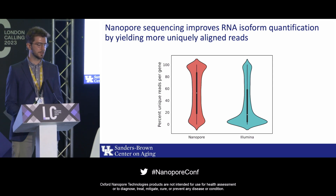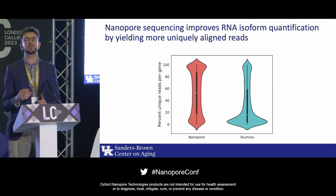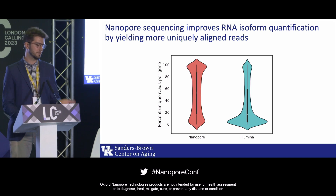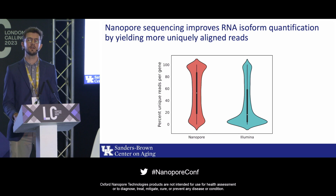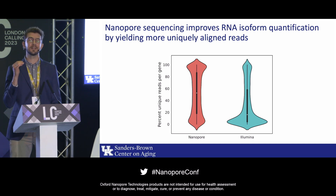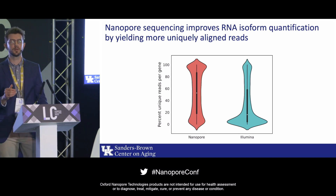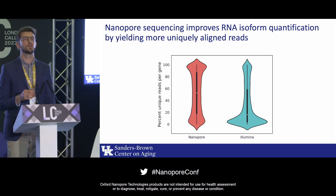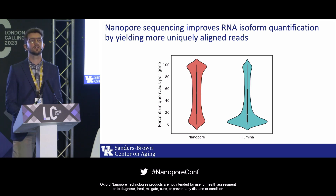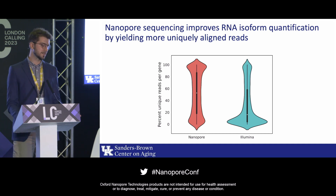There's a trade-off between throughput and percent unique reads. Direct RNA sequencing or direct cDNA gives more percent unique reads that uniquely align to a transcript but less throughput. PCR amplification gives less percent of reads that uniquely align but more throughput. In this example, we did PCR-amplified sequencing.